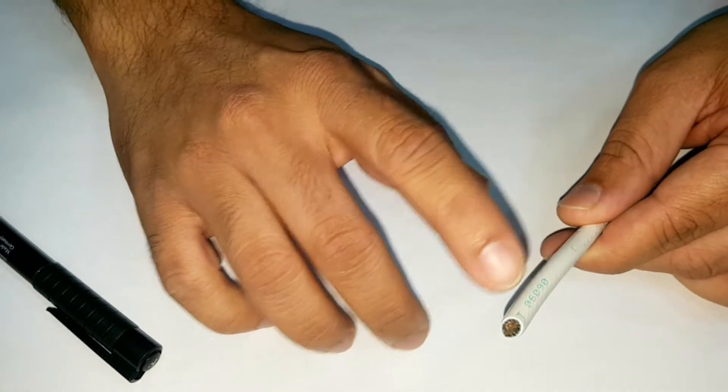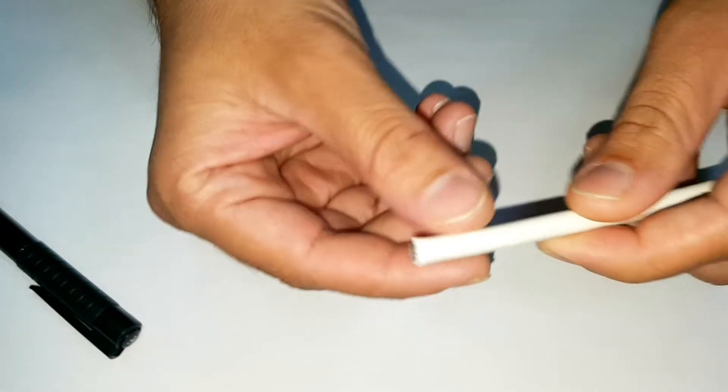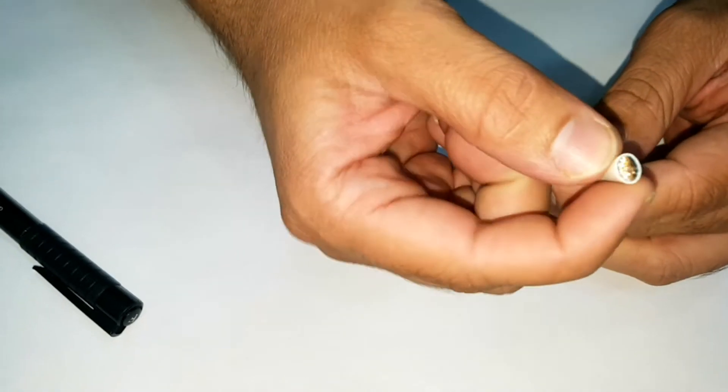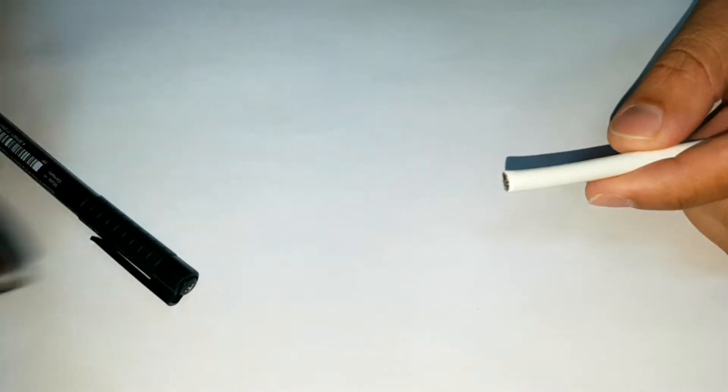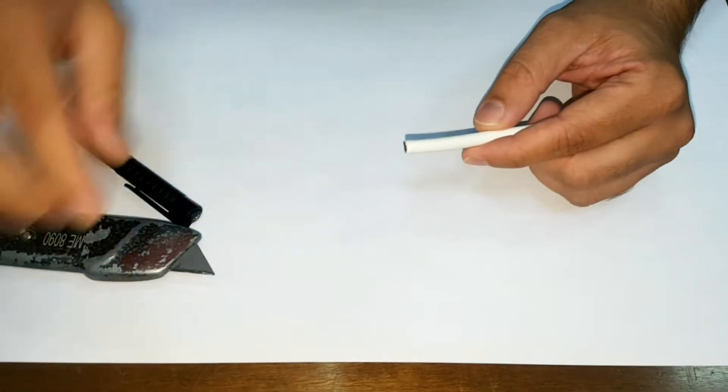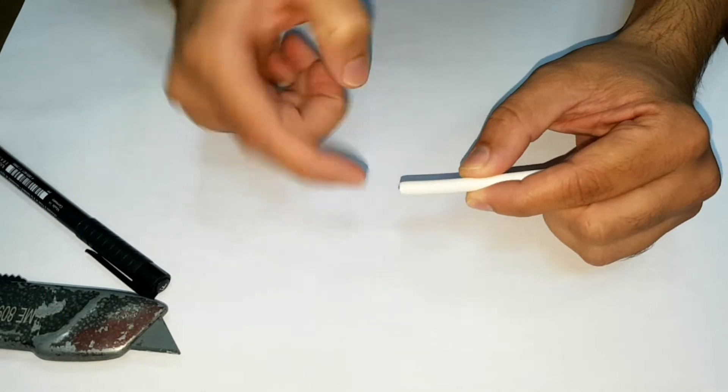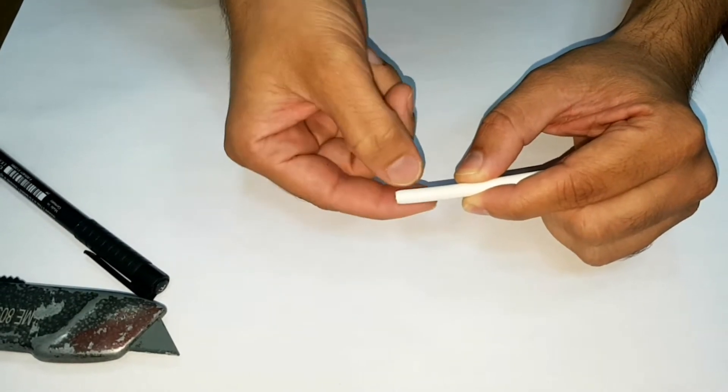Right now we are stripping this number six gauge wire. I'll show you how to strip it because we don't have the stripping tool for this kind of thick wire, you have to use a knife or a blade. The idea is first we'll cut like this horizontally and we'll make one slit over here, then we can remove the insulation.